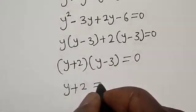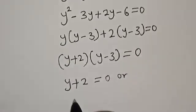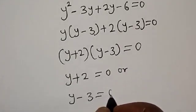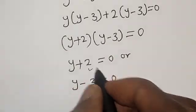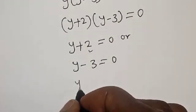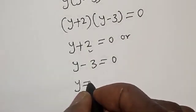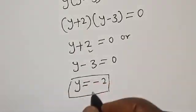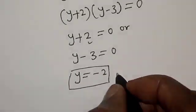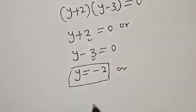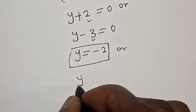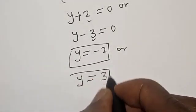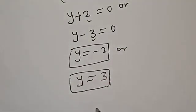From the factored form, we get y plus 2 equals 0 or y minus 3 equals 0. So the first value is y equals negative 2, and the second value is y equals 3.